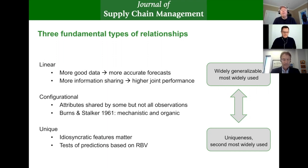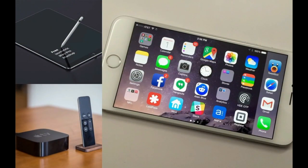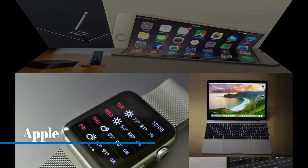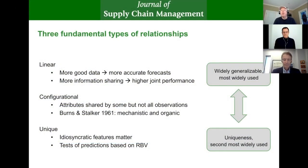At the other end of the spectrum, we have investigations of unique relationships, where we're looking at idiosyncratic features of organizations. Somebody like Apple would be considered exceptional on so many different dimensions — what are the unique features of Apple that make them so special? Those two types of research are the most common. Our focus in this paper is on configurational research, where we're looking at attributes shared by some observations, but not all observations.